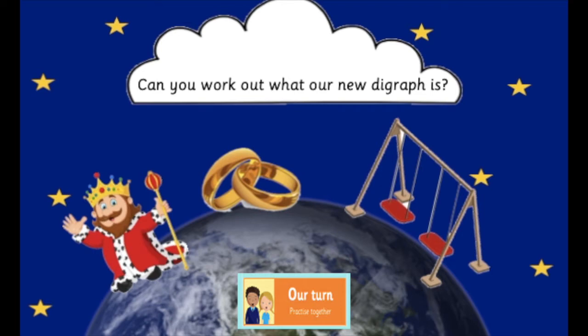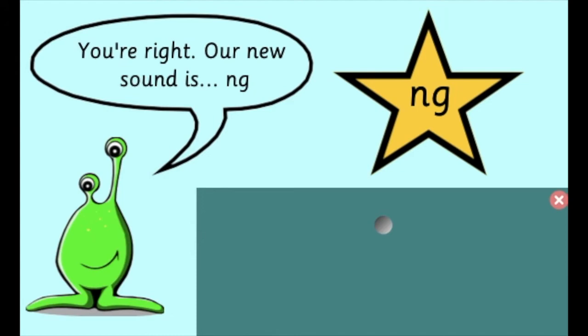Great job! Our new digraph for today — standing on planet earth we've got a king, ring, and swing. Say those words out loud and see if you can think about what our new digraph is going to be. You're right, our new sound is 'ng'. Can you say it with me? Ng. To make this digraph we've got N and G — ng.